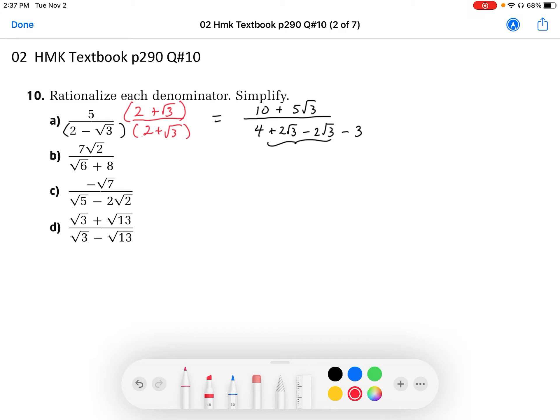So these terms are 0 pairs, so they cancel out. So we end up, in the end, in the numerator, 10 plus 5 root 3. In the denominator, we end up with 4 minus 3. And then this becomes over 1, and so we just leave this as 10 plus 5 root 3.